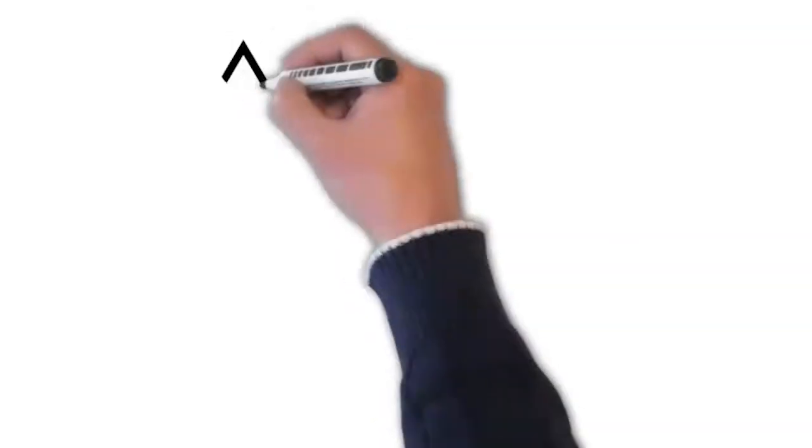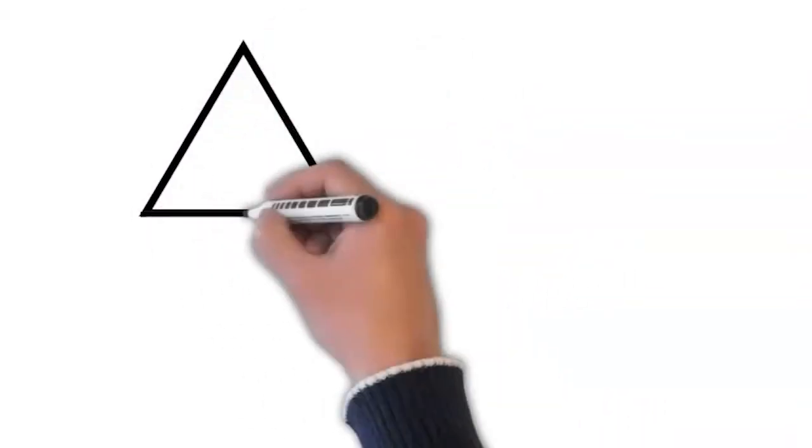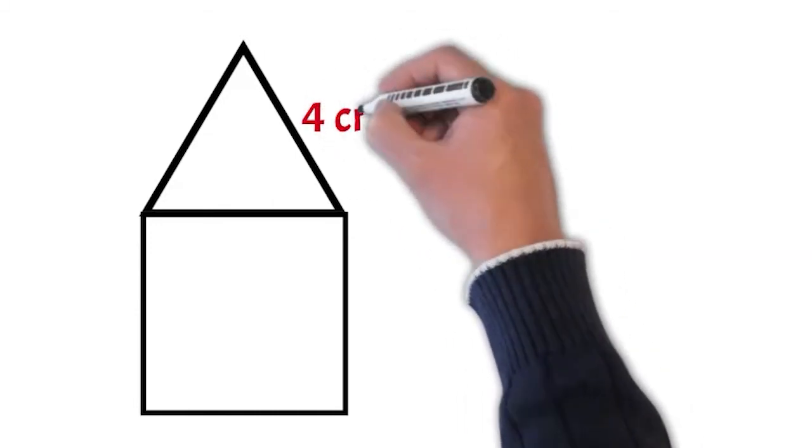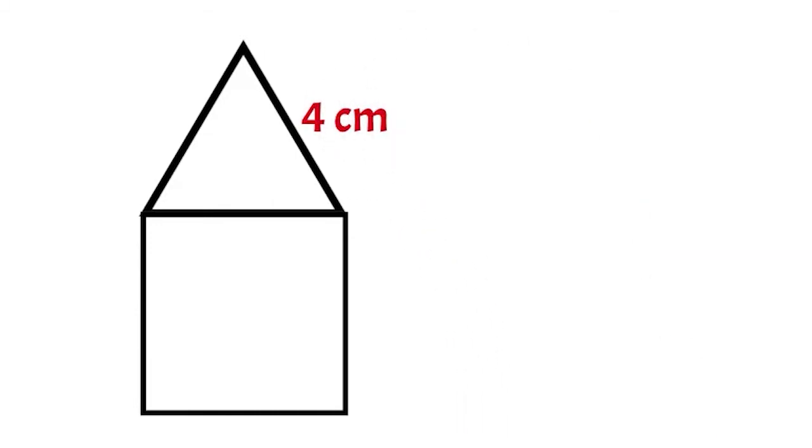So this lovely house I drew would be a composite shape. That's right, it looks like it is composed of a square and a triangle. And thanks to my amazing drawing skills, all of the sides of that triangle are exactly the same length. All the sides are four centimeters long. That's fantastic.